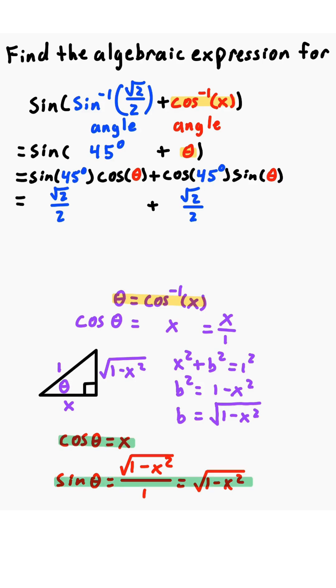Now, let's just substitute in. Cosine of theta was x, and sine of theta was the square root of 1 minus x squared. We notice both of these expressions has root 2 over 2, so we factor it out. So we have root 2 over 2 times x plus the square root of 1 minus x squared.